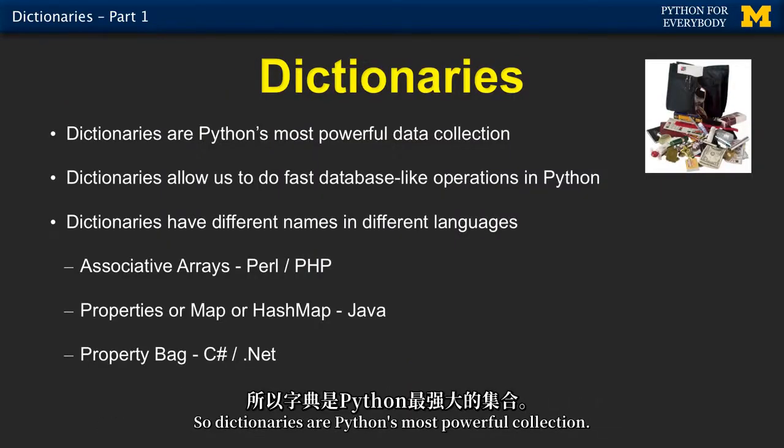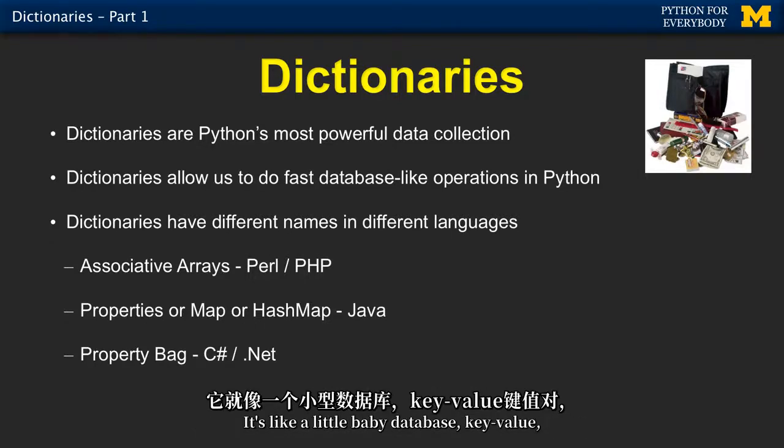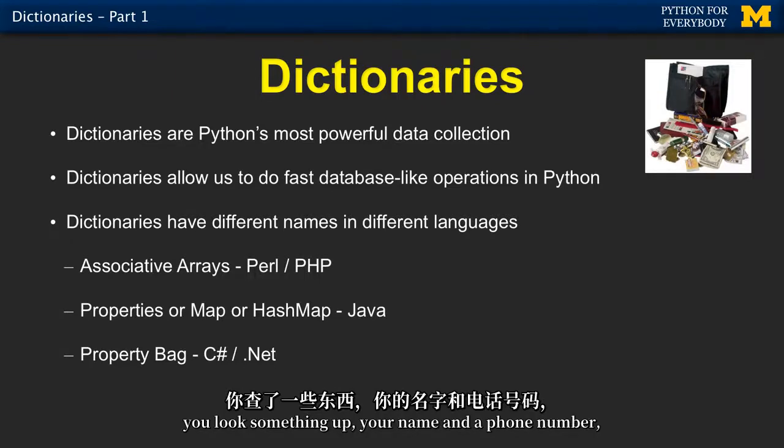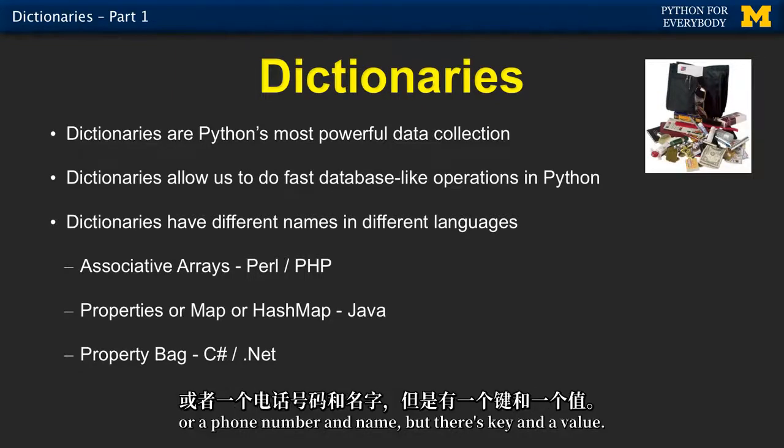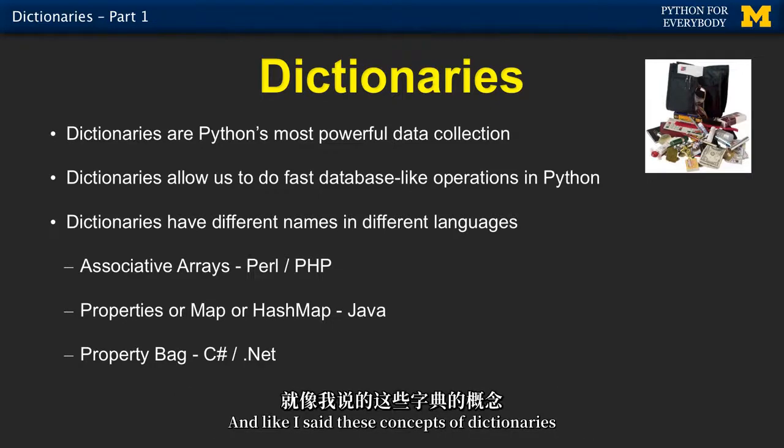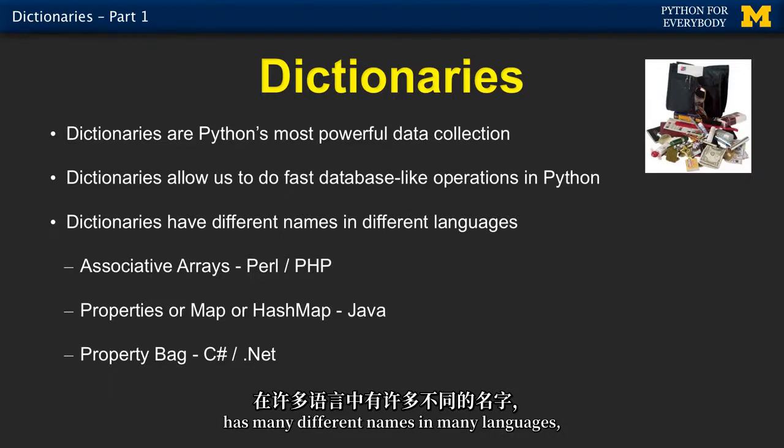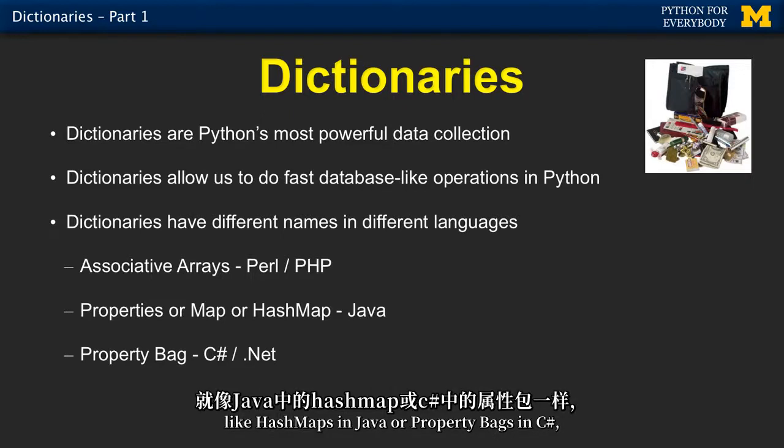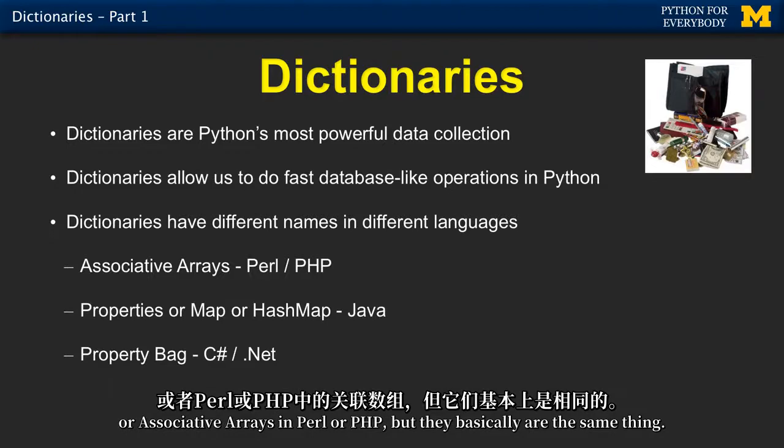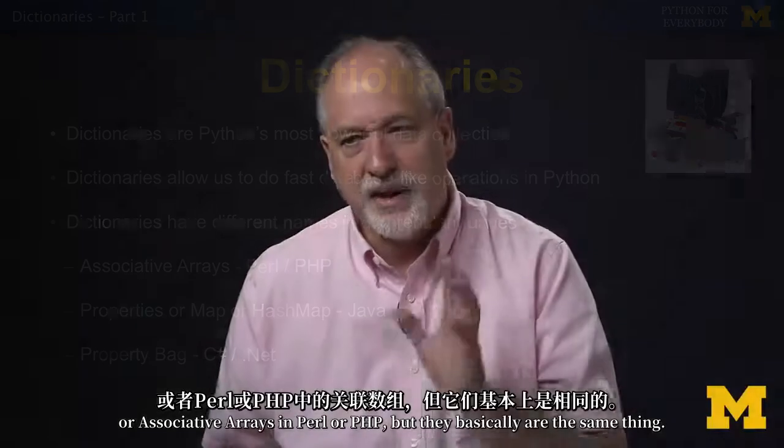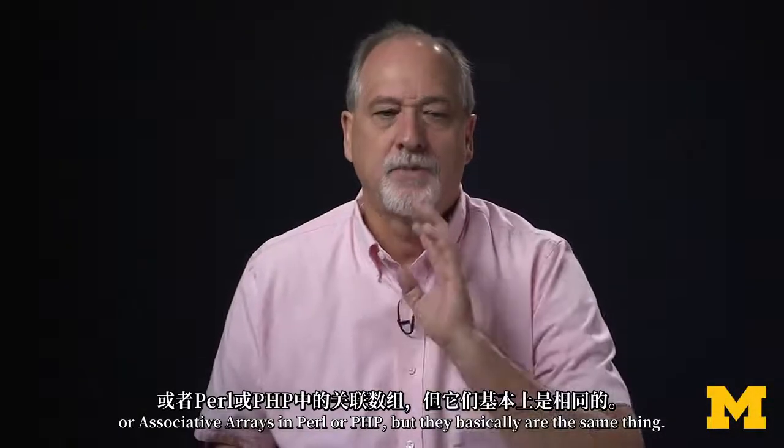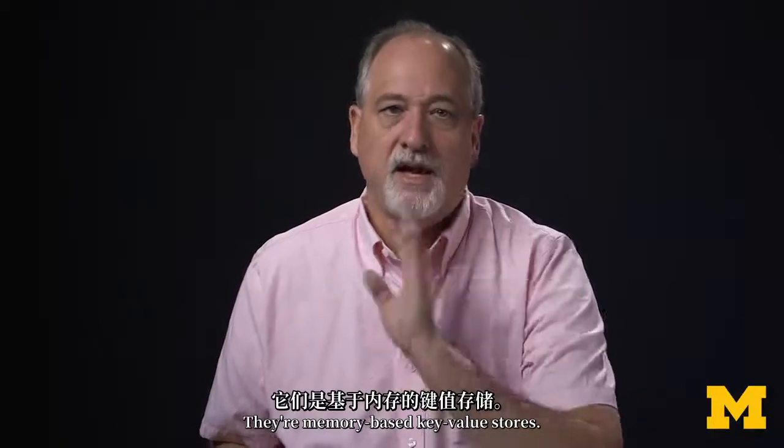So dictionaries are Python's most powerful collection. It's like a little baby database, key value. You look something up, your name and a phone number, or a phone number and name, but there's a key and a value. And like I said, this concept of dictionaries has many different names in many languages, like hash maps in Java, or property bags in C sharp, or associative arrays in Perl or PHP. But they basically are the same thing. They're memory-based key value stores.